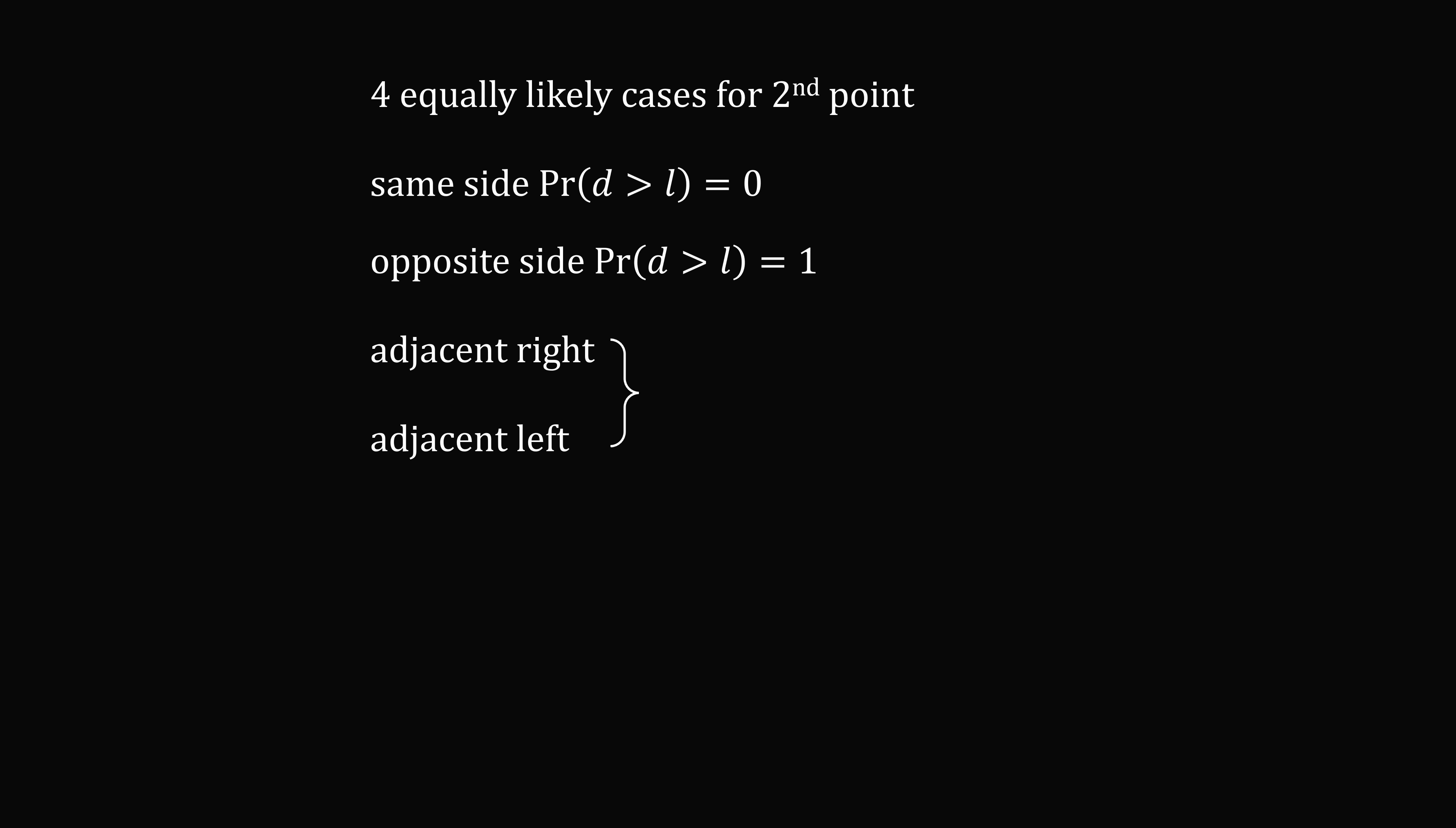There are four equally likely cases for the second point. And we figured out the last two cases each have a probability that's equal to 1 - π/4. Now each of these four cases is equally likely. So each has a probability of 1/4. So the final probability will be equal to 1/4 multiplied by the sum of these probabilities. And this exactly works out to be 3/4 - π/8, which is approximately equal to 0.357. And that's the answer.